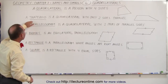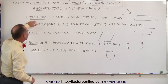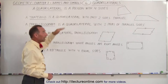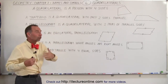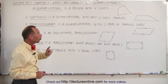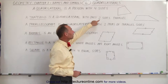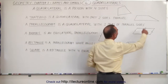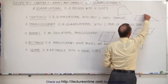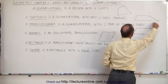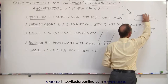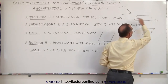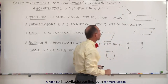The first one is called a trapezoid. A trapezoid is also a quadrilateral. It has four sides and four angles, but two sides are parallel. Here's an example where the top and the bottom side — these two are parallel to one another, the other two are not. So this is called a trapezoid.